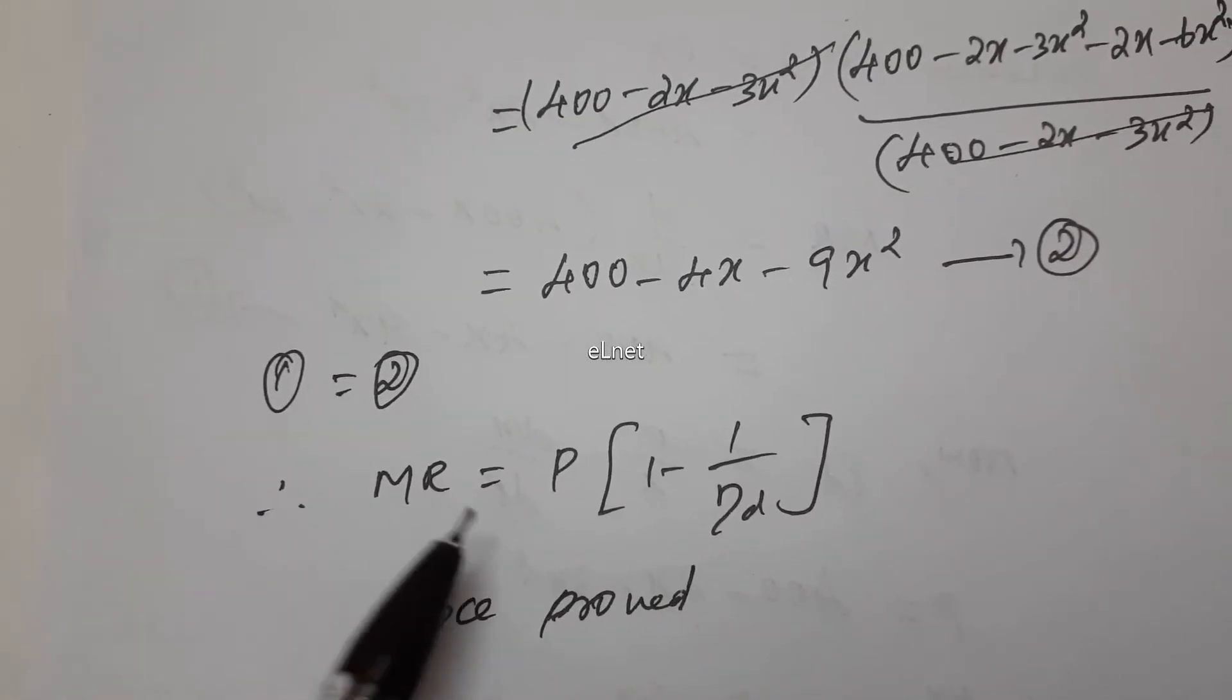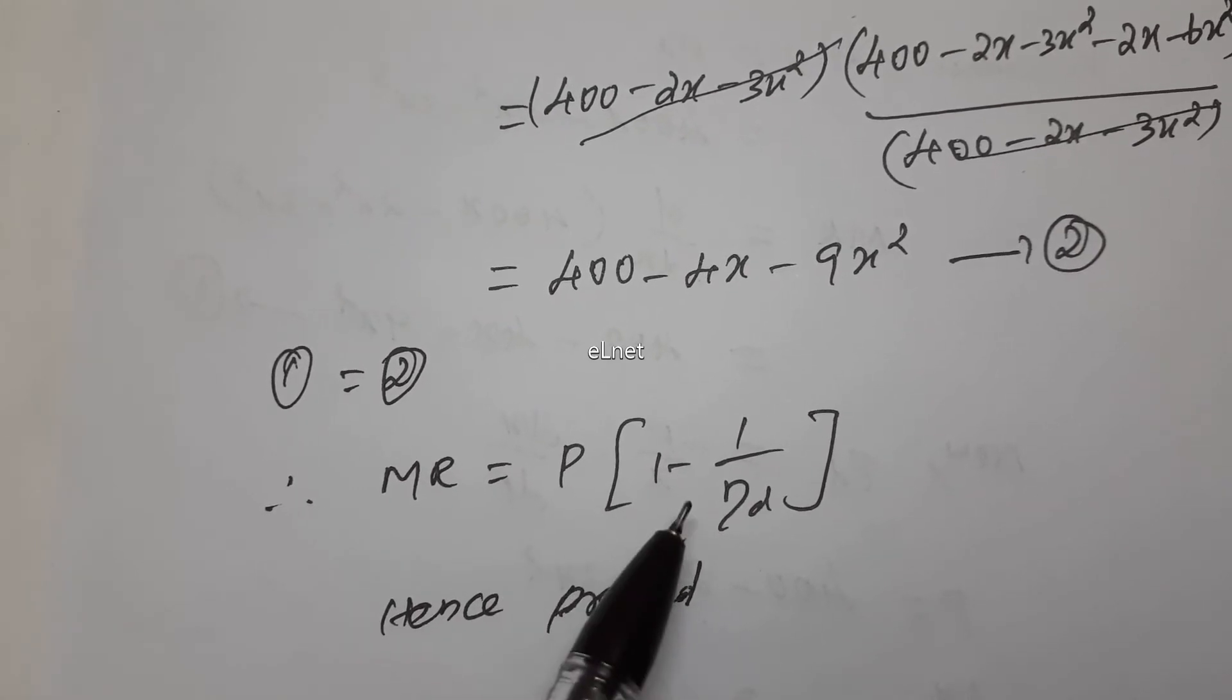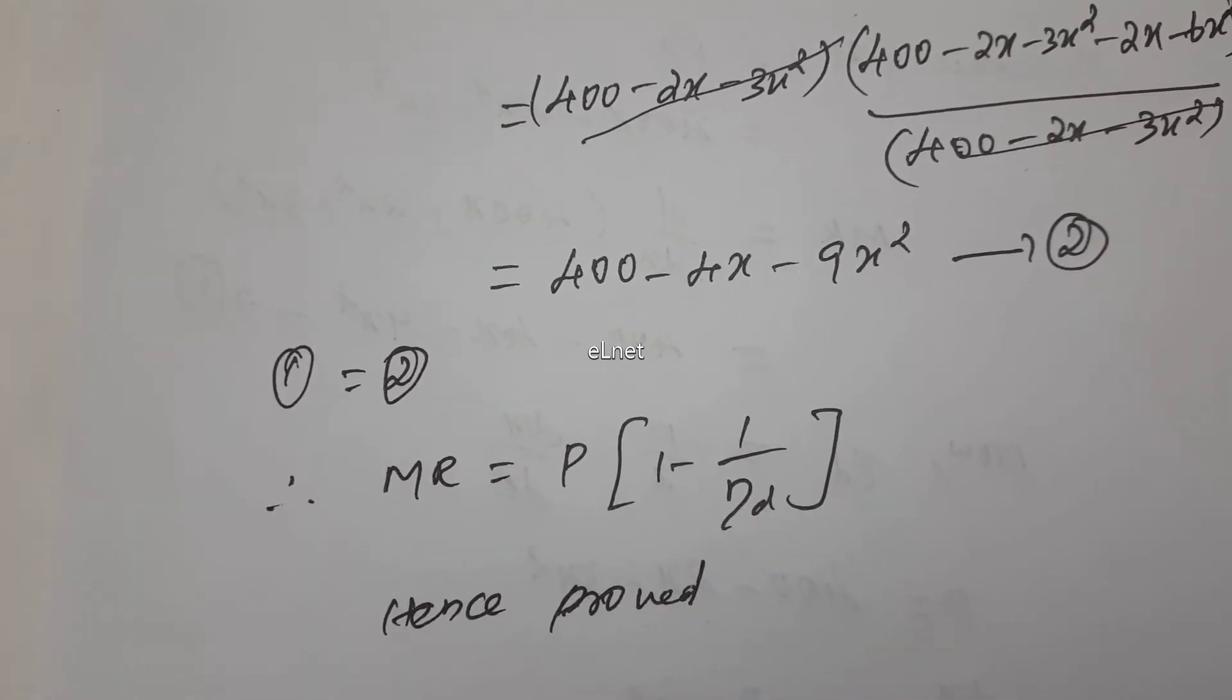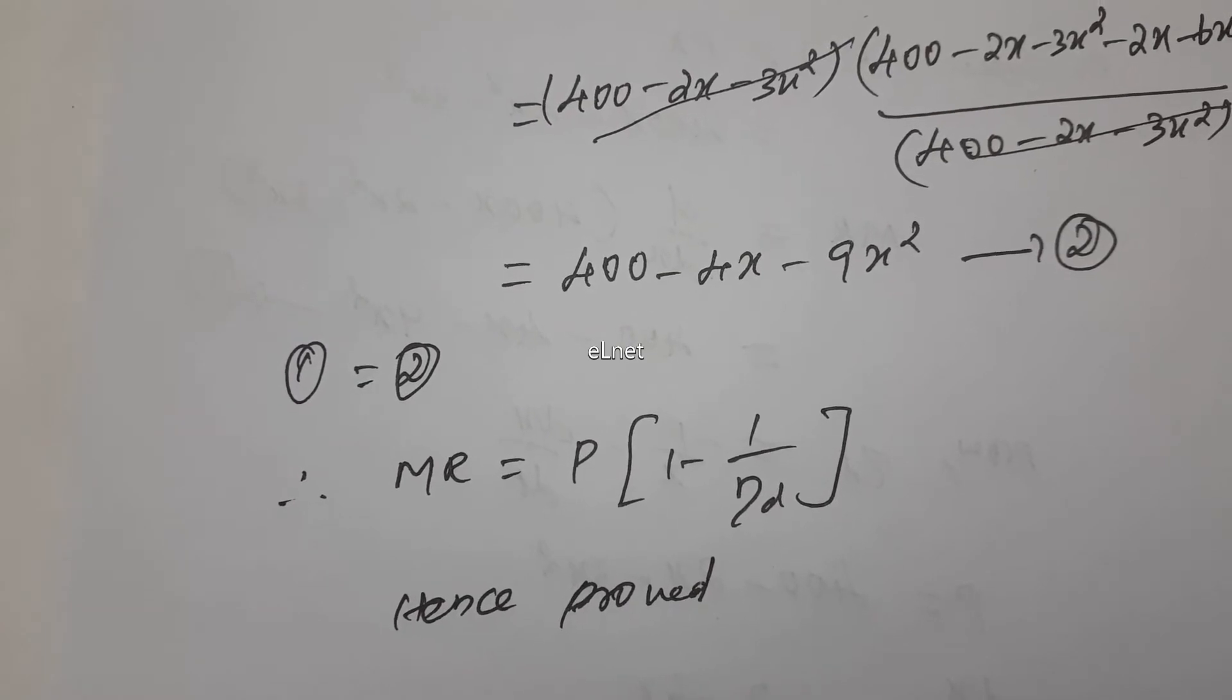Marginal Revenue found, equation 2 equals equation 1. Therefore, MR is equal to P times 1 minus 1 by eta D. Hence proved. Easy to prove.